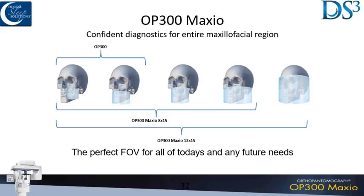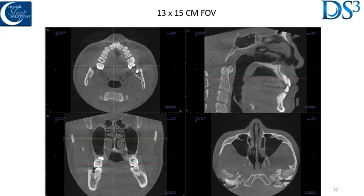There are different sizes — different fields of view — that you can get. If you get towards the right side of the spectrum, you can do airway with the larger two field sizes pretty easily. The largest is best because you get everything in one image. If you want the nasal airway in addition to the oral airway and the teeth, with a smaller FOV you may have to take separate images.